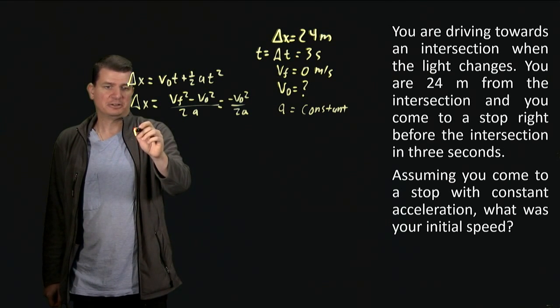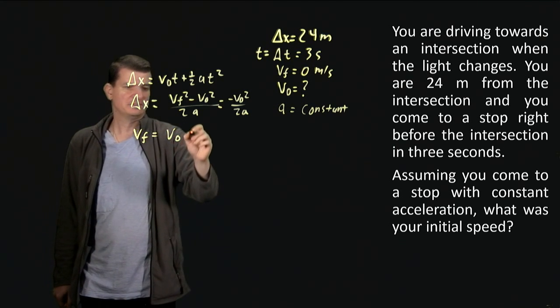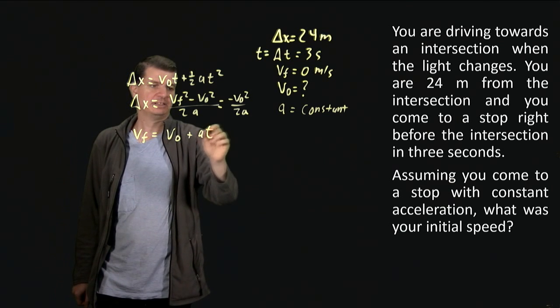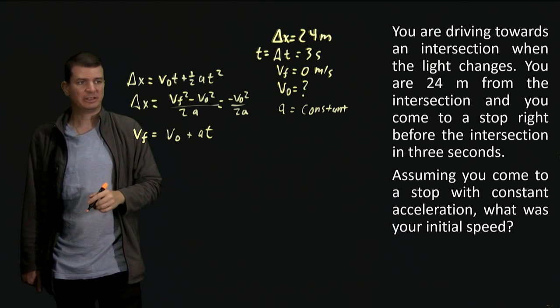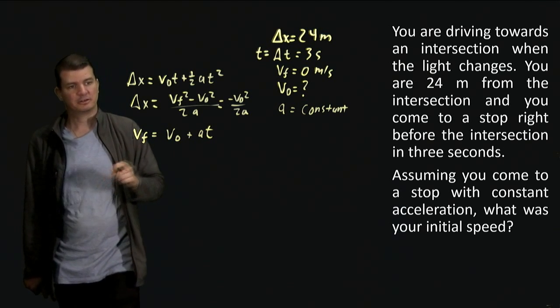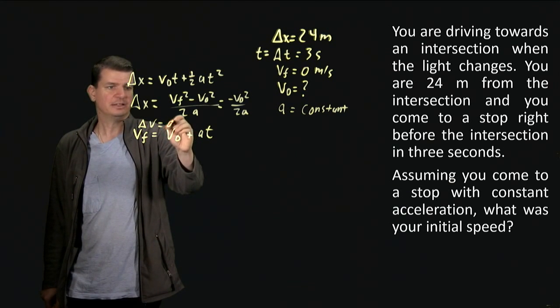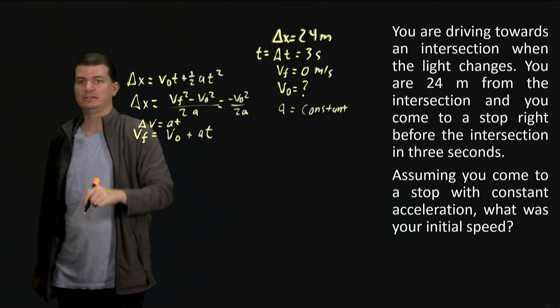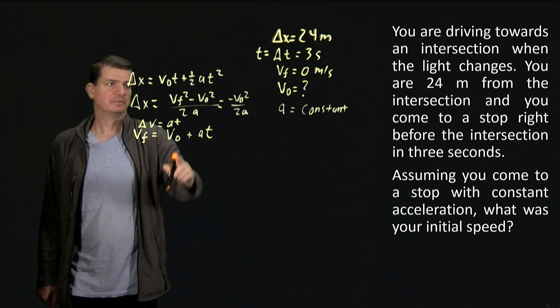What else do we know? Well, we know by definition that vf is v zero plus a t. That's how acceleration works: it's giving you the time rate of change of velocity. So multiply that constant rate by the time, that tells you delta v. So that equation you may remember is actually coming from delta v is a t, but delta v is vf minus v zero, so I can put it on the other side. I can write it this way.